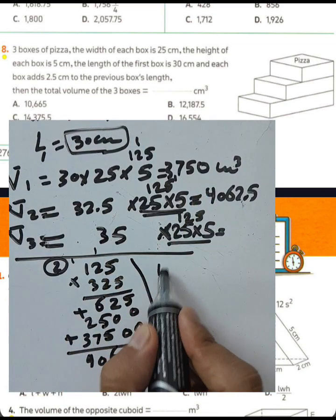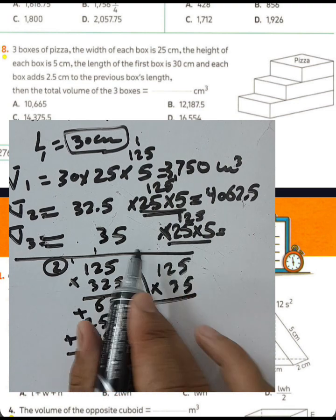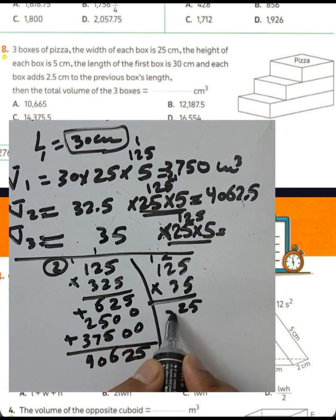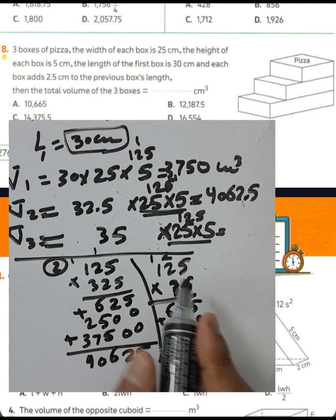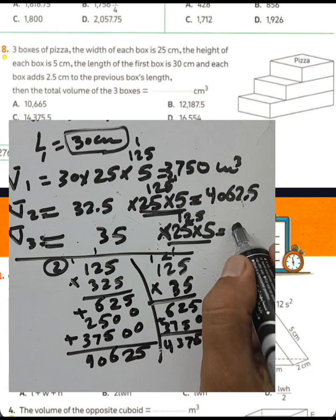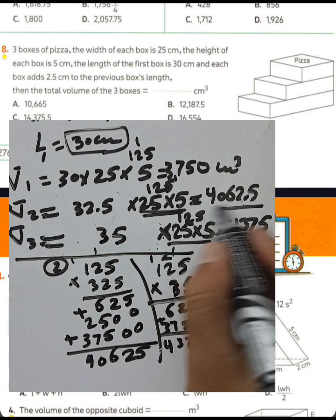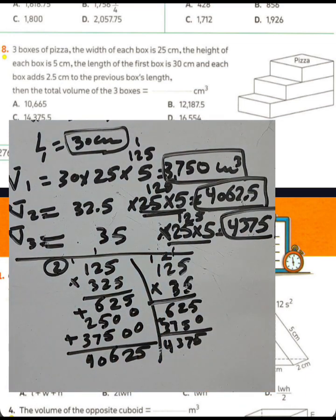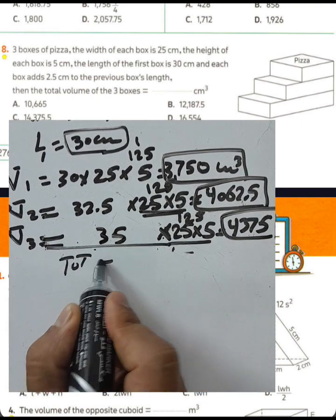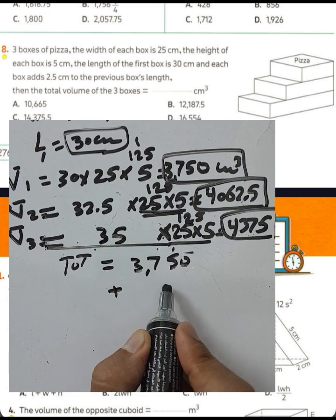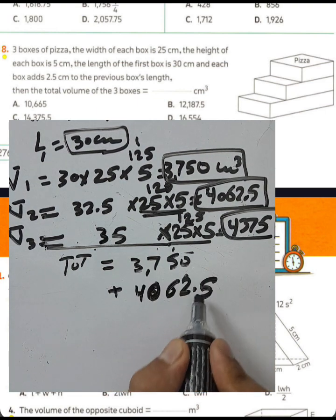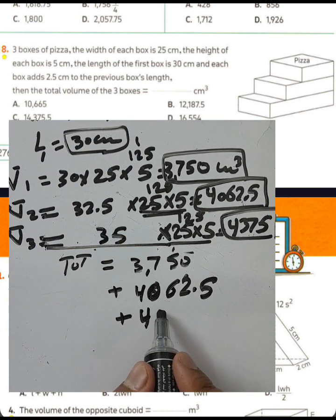Volume three: 125 times 35. Multiplying step by step: 5 times 125 equals 625, 3 times 125 equals 375; summing gives 4375 cubic centimeters. Now add all three volumes: 3750 plus 4062.5 plus 4375.